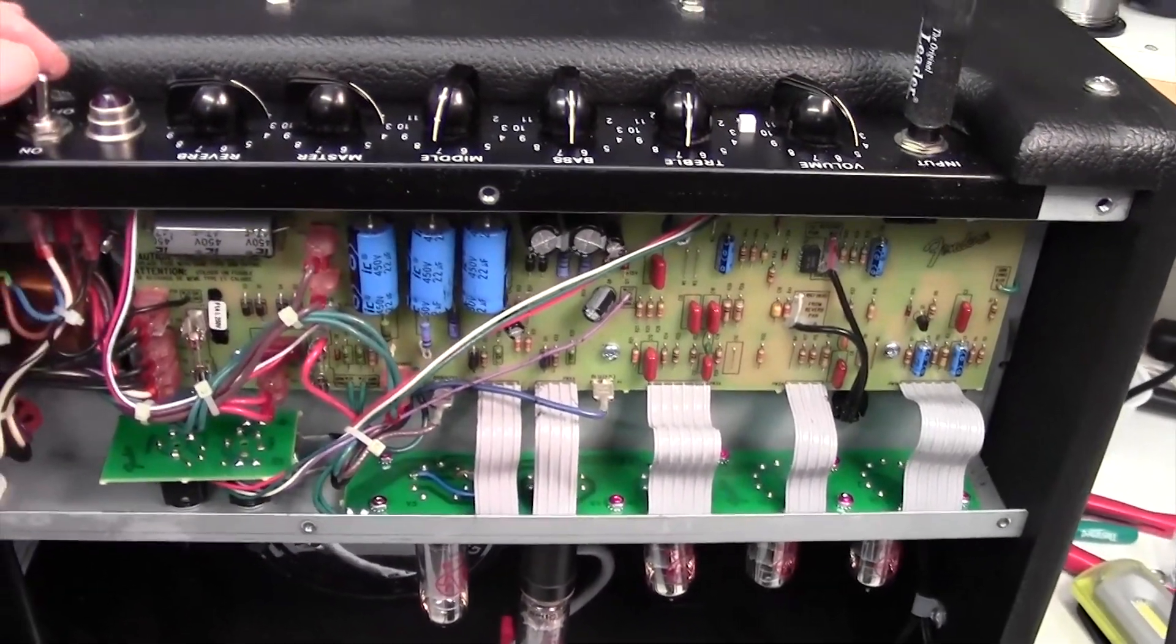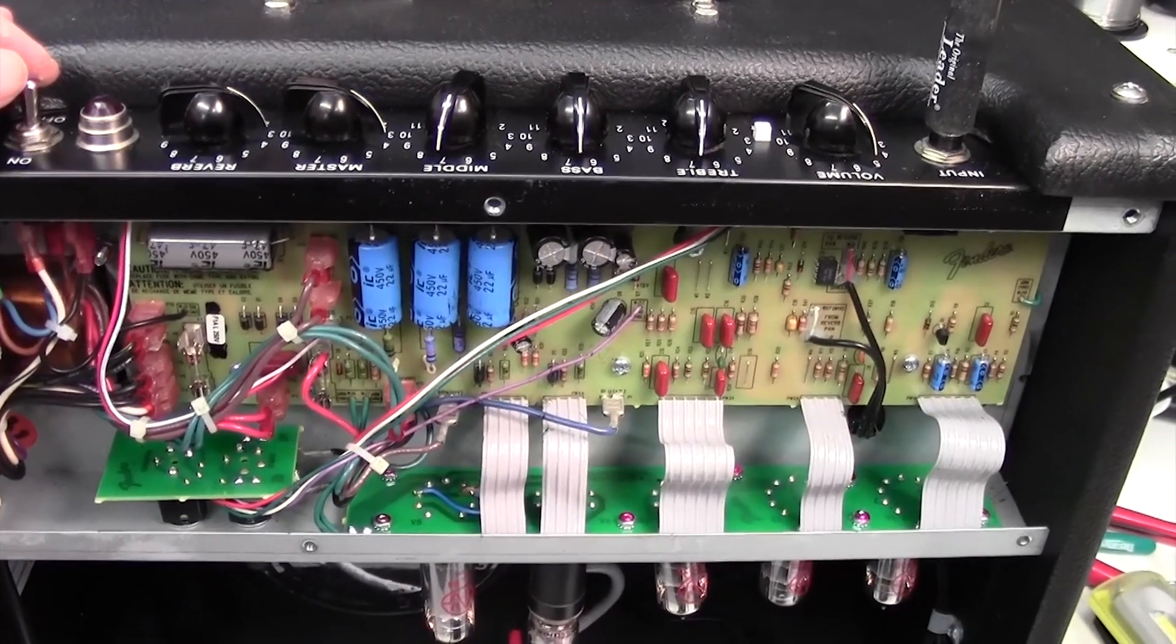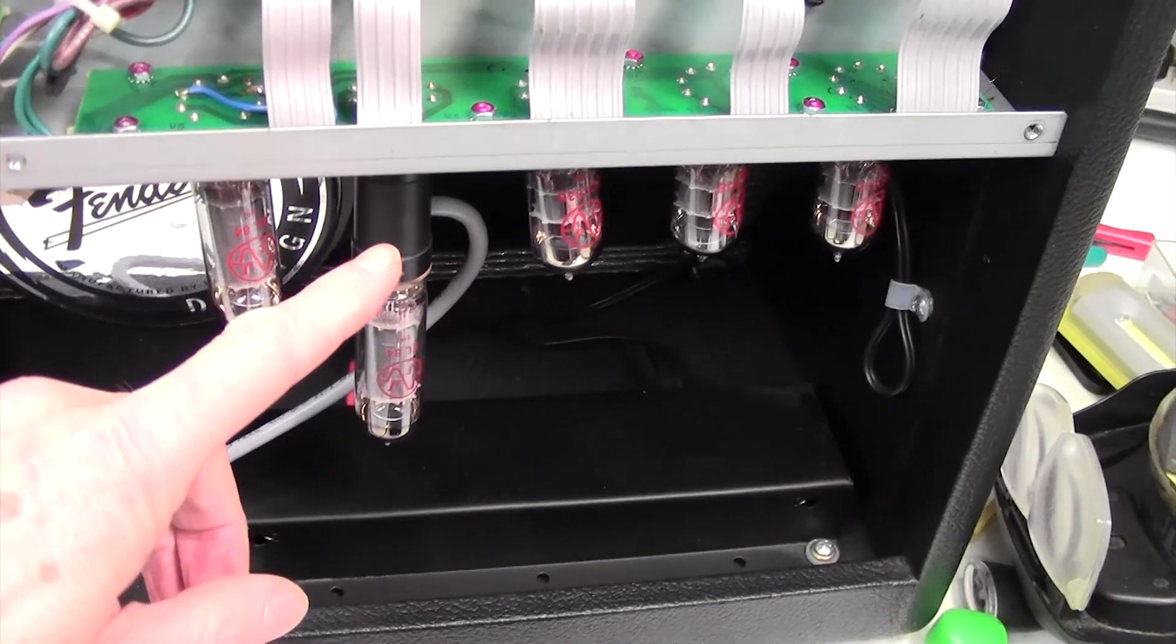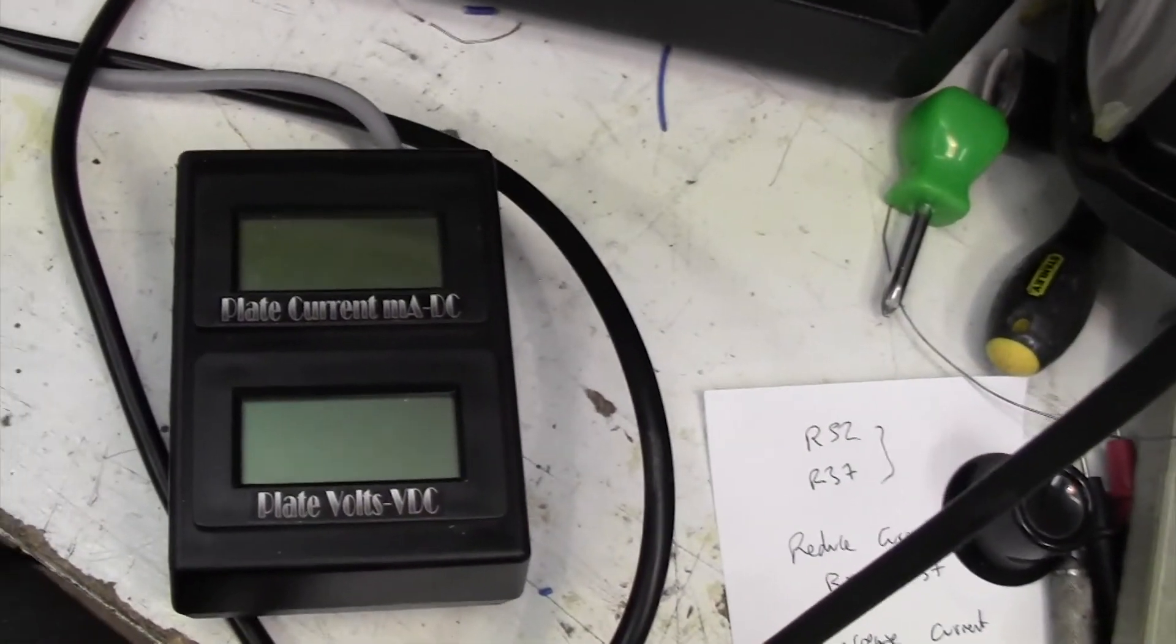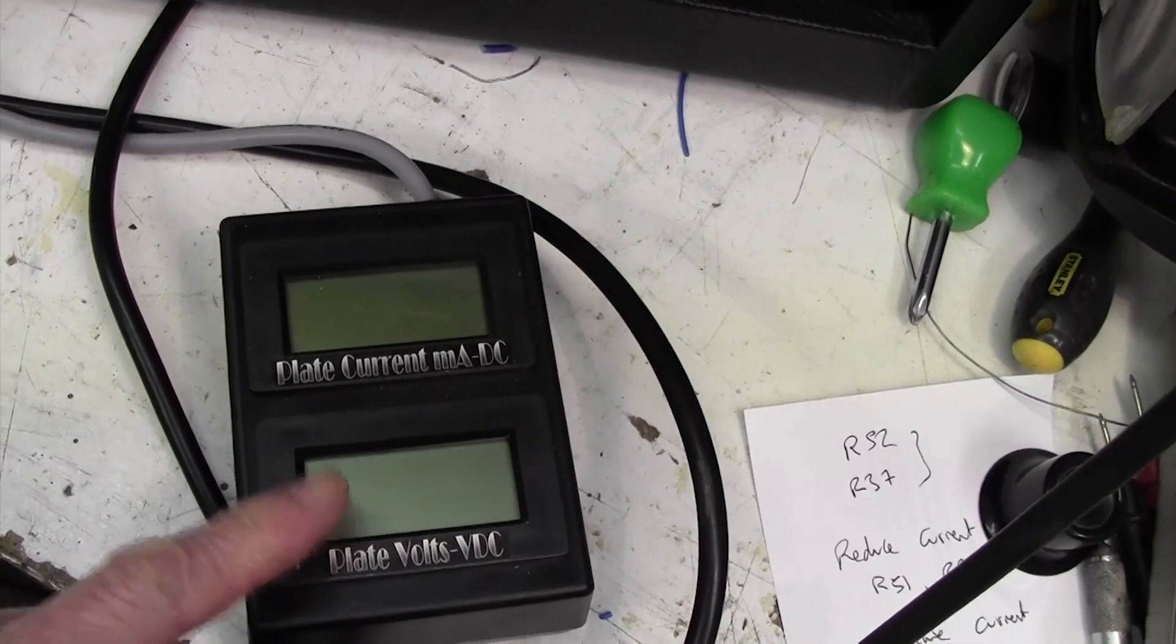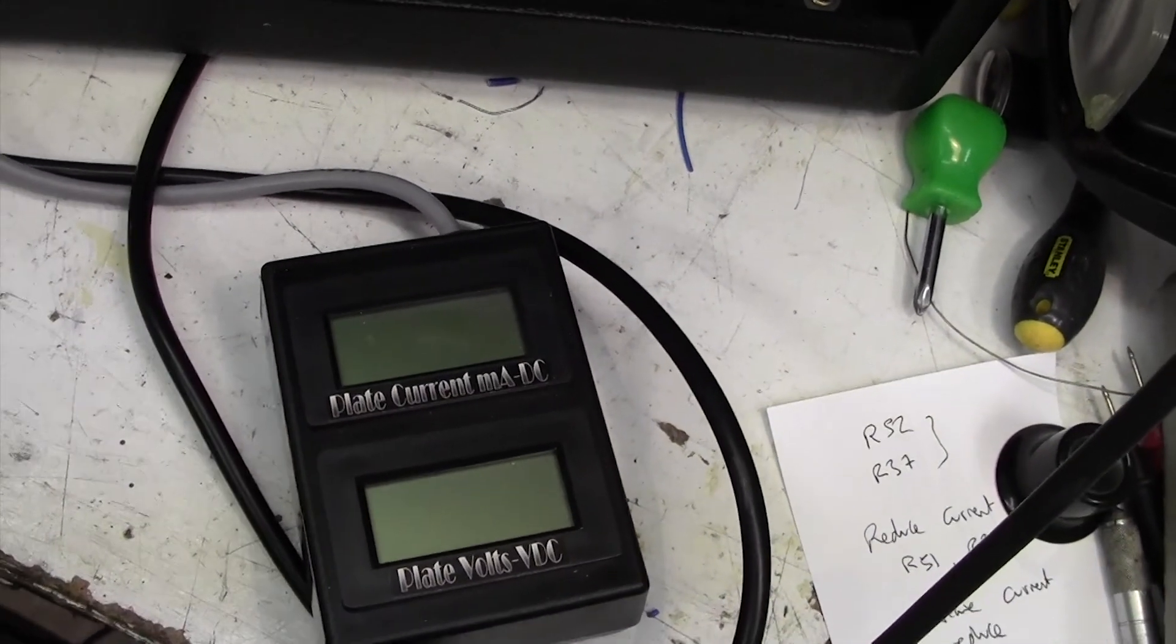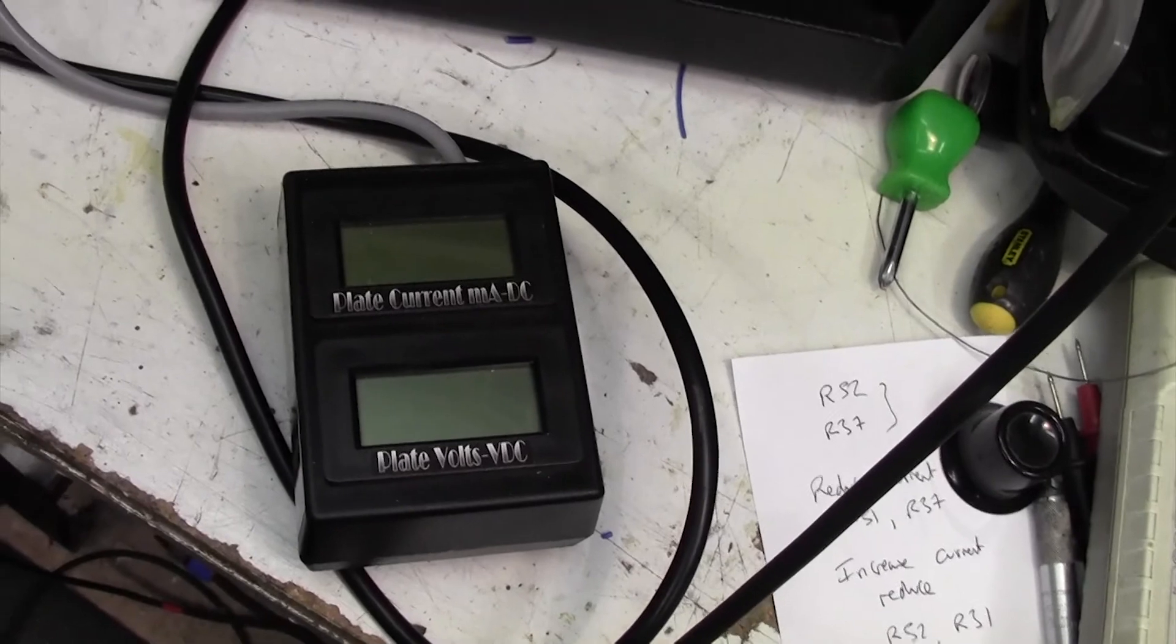Well I now have the back off the amplifier. There we are, a view inside. I just want to show you this neat little EuroTubes bias probe that I've got which does EL84s. It connects to this box here and it shows you the plate voltage and the tube current. You won't have one of these so don't worry, but I just wanted to show it to you. It's such a neat device.